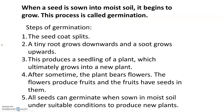Steps of germination: First, the seed coat splits. Second, a tiny root grows downwards and a shoot grows upwards. Third, this produces a seedling which ultimately grows into a new plant. Fourth, after some time the plant bears flowers. The flowers produce fruits, and the fruits have seeds in them. All seeds can germinate when sown in moist soil under suitable conditions to produce new plants.